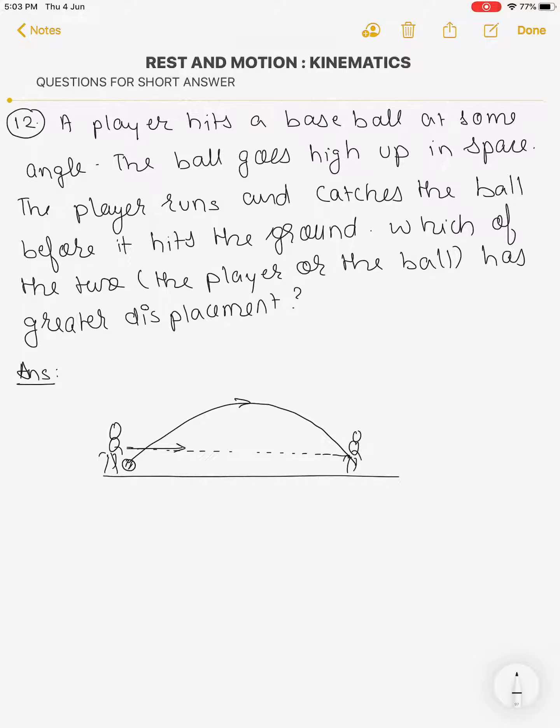And it is said that the player, getting here, catches the ball. So this is the A point and this is the B point, that is initial and final point. Which of the two has greater displacement?